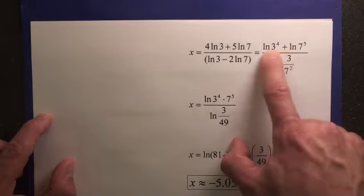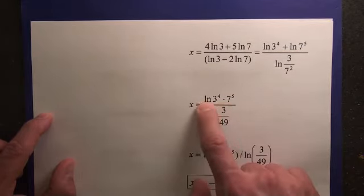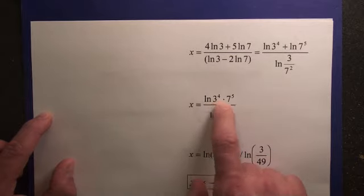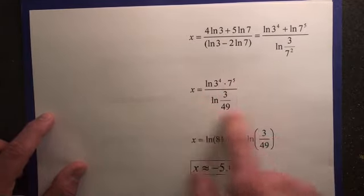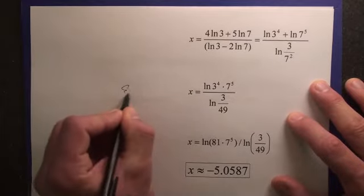Then the numerator, because it's an addition of 2 different logs, we can put one log together. Well, one natural log. And you've got ln 3 to the 4th times 7 to the 5th power. So this would be your exact answer. So this would be the exact answer right here.